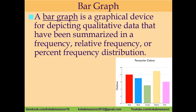We have various types of graphs. The most common and easiest is called a bar graph. As the name suggests, we have bars — you can see them on screen. When you have data in qualitative form, we mostly summarize that data and present it as a bar graph.